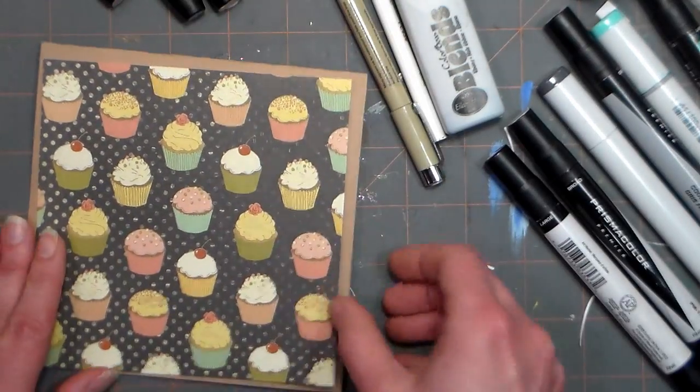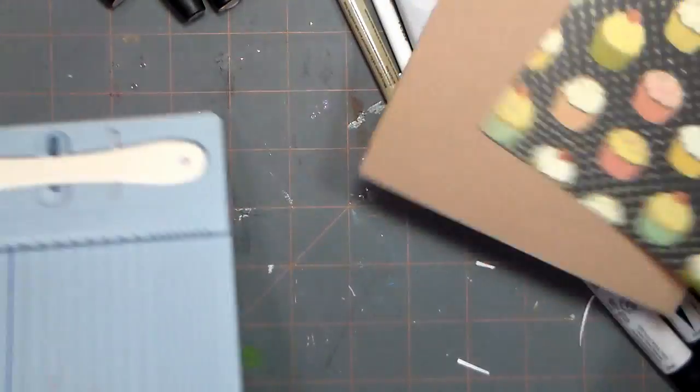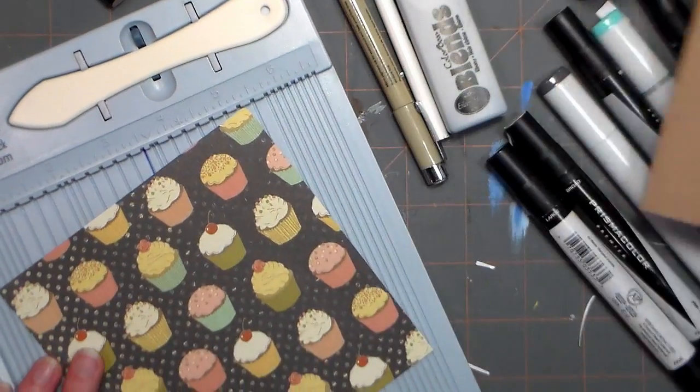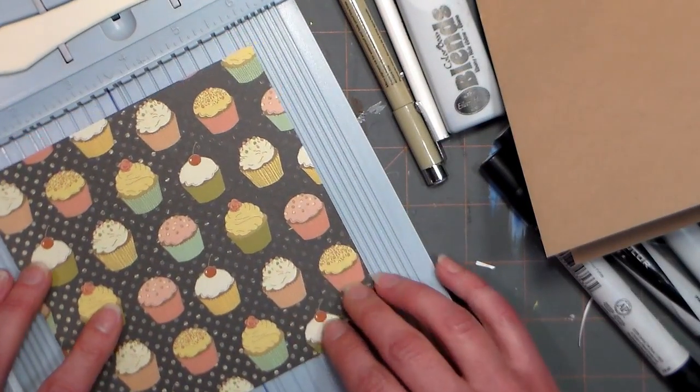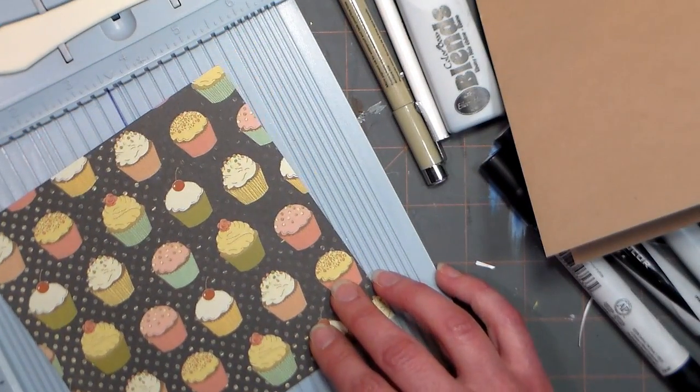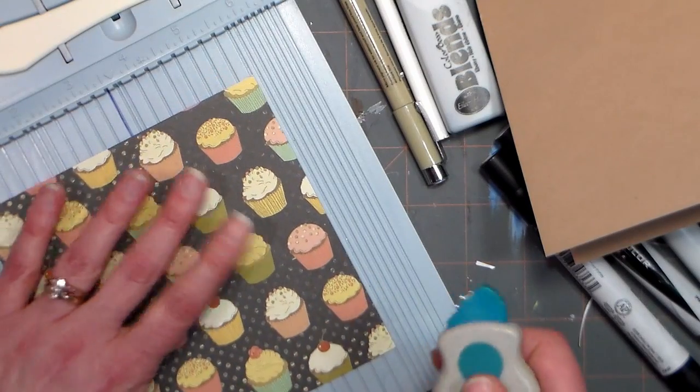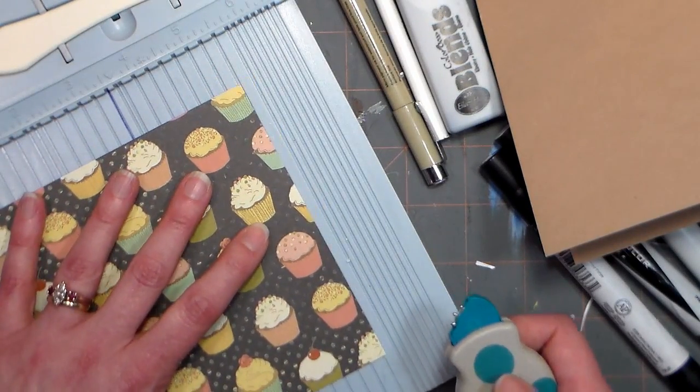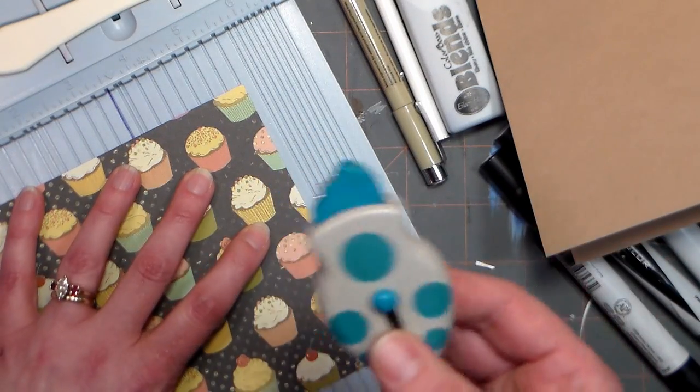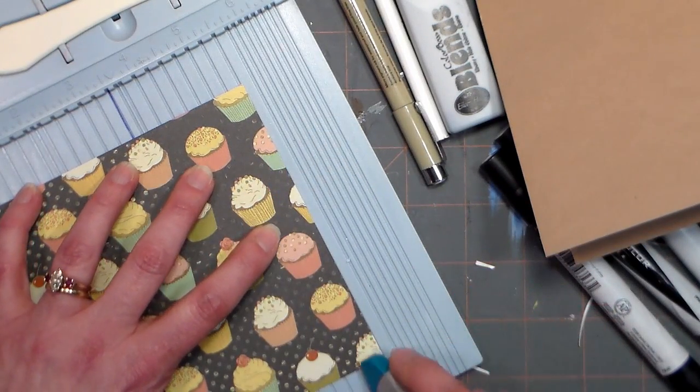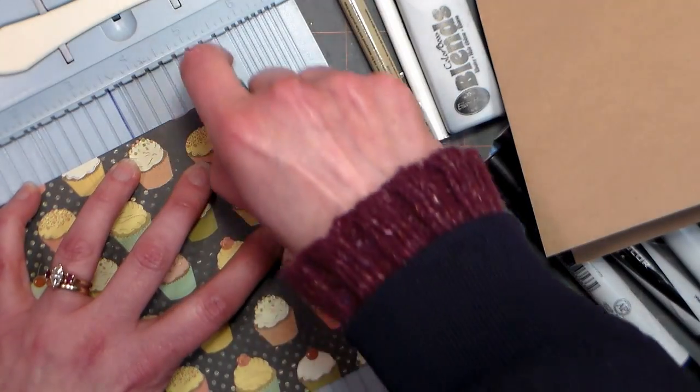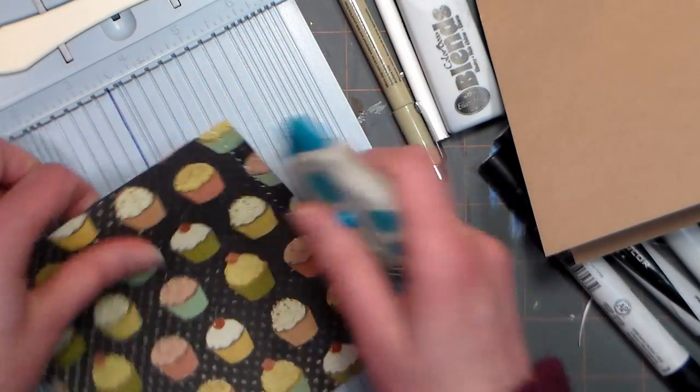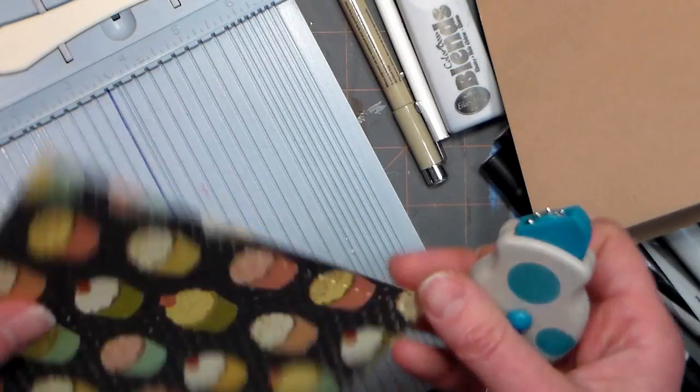So what I'm going to do here first is add some faux stitching to my paper, and I've got this little scoring board. Any scoring board is going to work for this. This happens to be the Score Buddy, and I'm using this little tool called the Score Bug by EK Success. You can buy it from Score Pal, or you can use the pink ones from EK Success, and I'm pretty sure a dressmaker's wheel will work, but I haven't used it, so be careful you don't damage your board if you do give that a try.